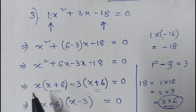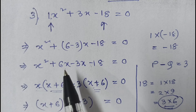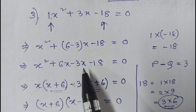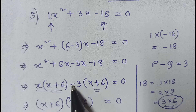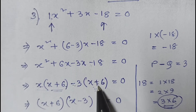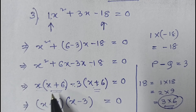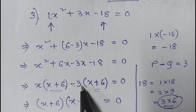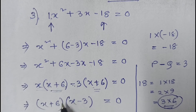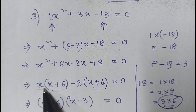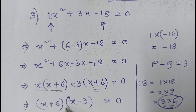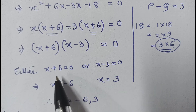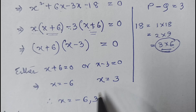From the first two terms, take x common: x(x+6). From the last two terms, take -3 common: -3(x+6). Now (x+6) is common, so we get (x+6)(x-3) = 0. Either x+6 = 0 giving x = -6, or x-3 = 0 giving x = 3. Therefore the roots of the given equation are -6 and 3.